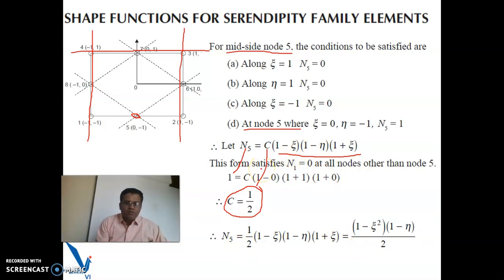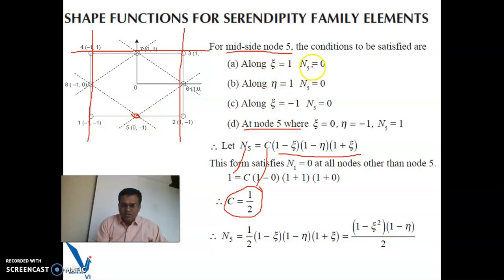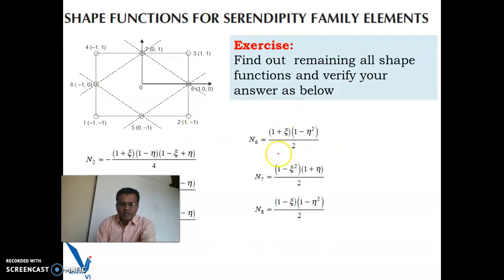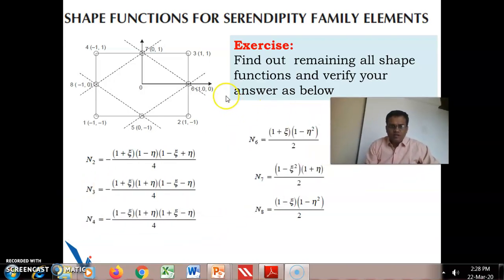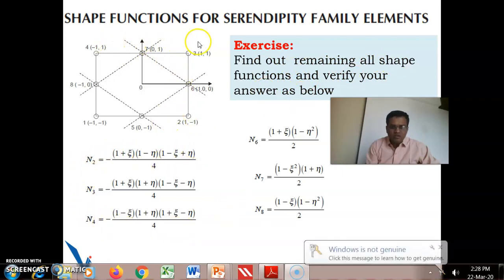The idea is that using the property that n1 is 1 at that node and 0 at all other nodes, we draw lines and write their equations, multiply them together with a constant, and force the result equal to 1 at the target node point — and it automatically equals 0 at all others. By following this same procedure, you can find shape functions for all other node points as an exercise, and verify your answers.